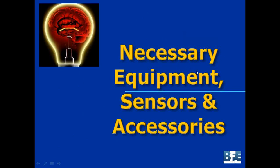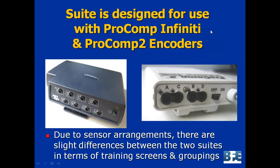The necessary equipment and sensors you need to run the suite starts with the encoder. You can use a ProCom Infinity or ProCom 2 encoder. The ProCom Infinity can run eight sensors all at once, whereas the ProCom 2 can only run two sensors at once. That means there will be slightly different sensor configurations between the two versions of the suite, but it's essentially the same training programs and software.